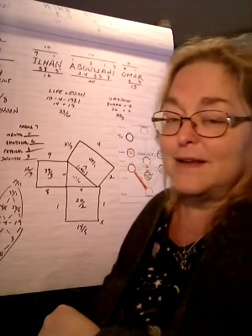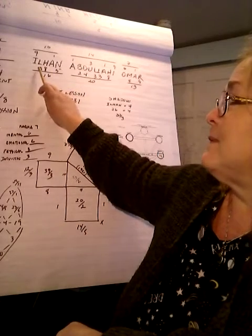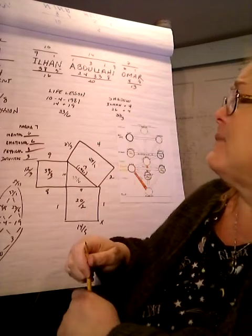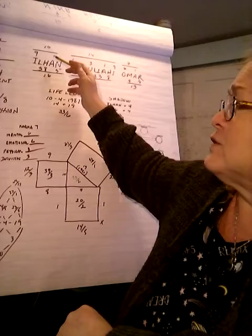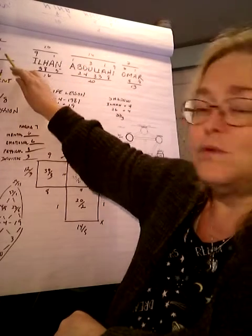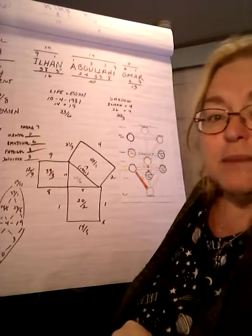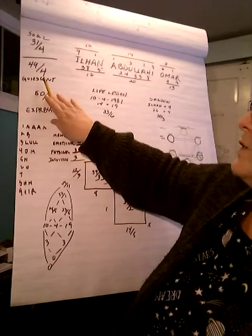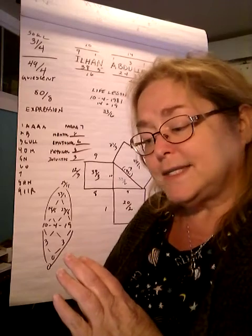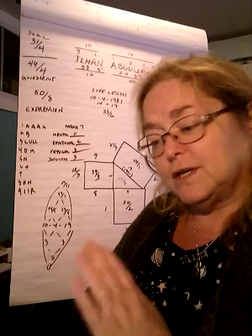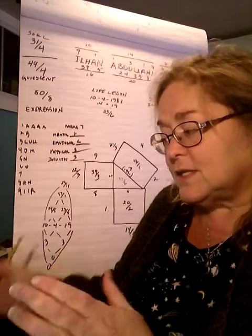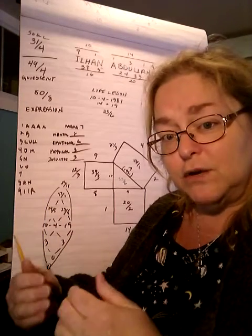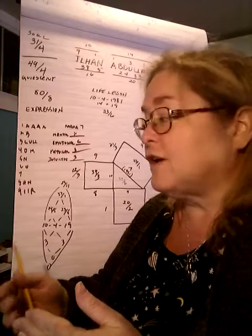So let's look at Ilhan. Her full name is Ilhan Abdullahi Omar. And if we look at her soul vibration and her outer personality vibration, what's interesting is she's a double four. Let me pull this over a little bit further. So her soul vibration is a four. Her outer personality vibration is a four. So to a certain extent, there's a similarity in energy between the inside and outside of her.